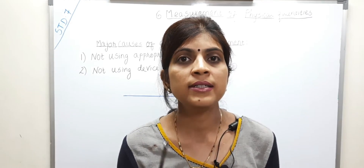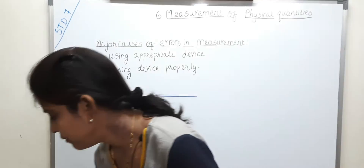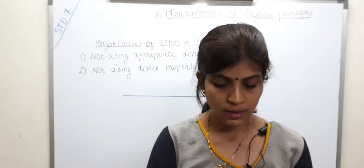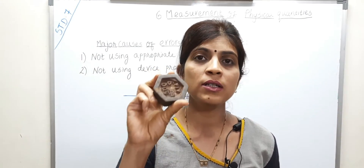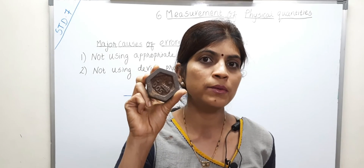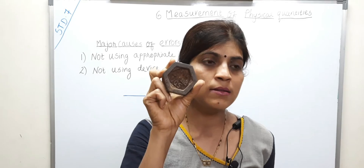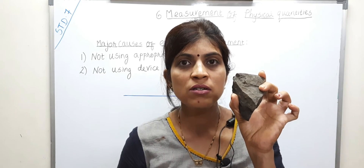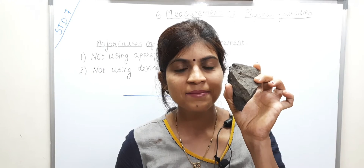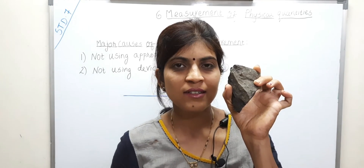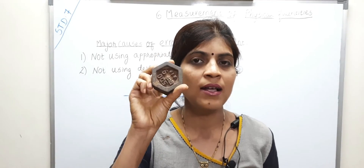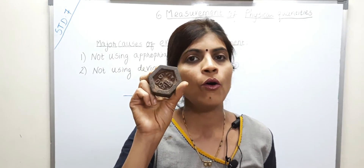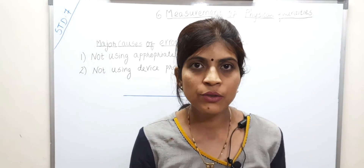Another example: suppose in a grocery shop, the grocer uses a stone instead of a proper weighing device to measure the mass of things. Will he or she be able to measure the mass of any quantity correctly? Of course not. So we have to use the appropriate device — like proper weighing scales — to measure the mass of any quantity, whether at a grocery shop or a vegetable vendor.